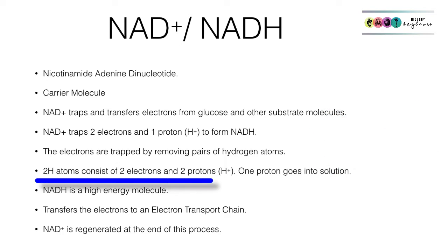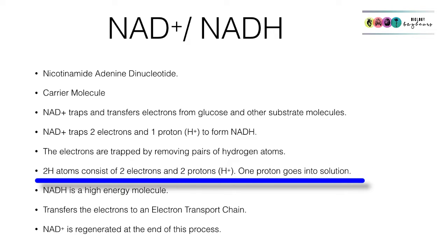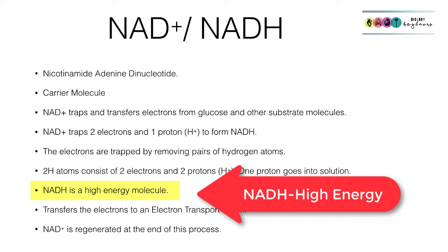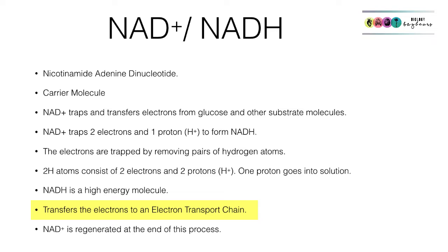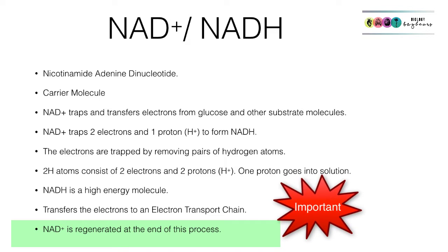Two hydrogen atoms consist of two electrons and two protons. One of the protons will go into solution because NAD+ traps two electrons and one proton, so the other proton goes off into solution. At the end you have NADH, which is a high-energy molecule. Its role is to transfer those electrons to an electron transport chain, dropping them off in the process and reverting back to NAD+, which is regenerated.